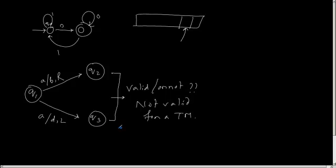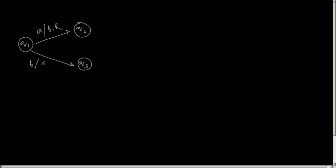Now let us draw another thing. Suppose I am in Q1 moving to Q2 A slash B comma R, and moving to Q3 B slash T comma L. So is it valid one or invalid one? Yeah, it's a valid one because I am switching to two different states and behaving differently with two different input symbols.